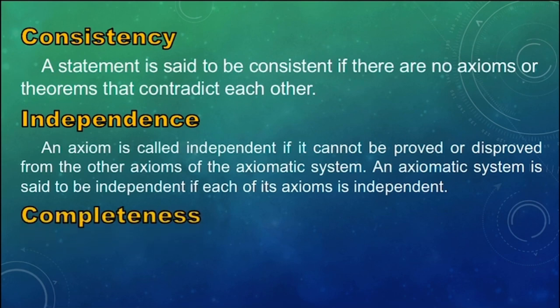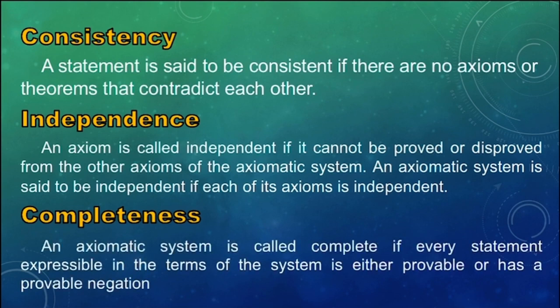And last, we have completeness. An axiomatic system is called complete if every statement expressible in the terms of the system is either provable or has a provable negation.